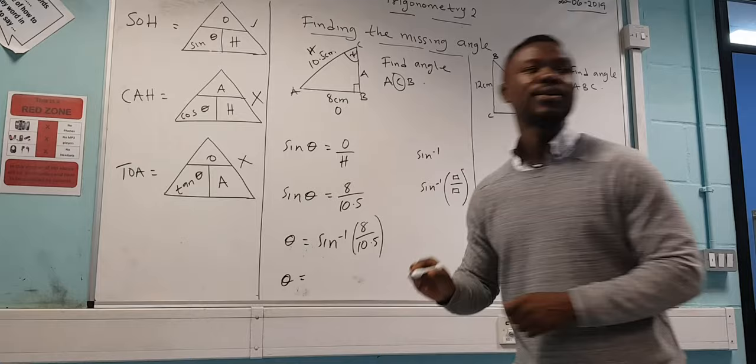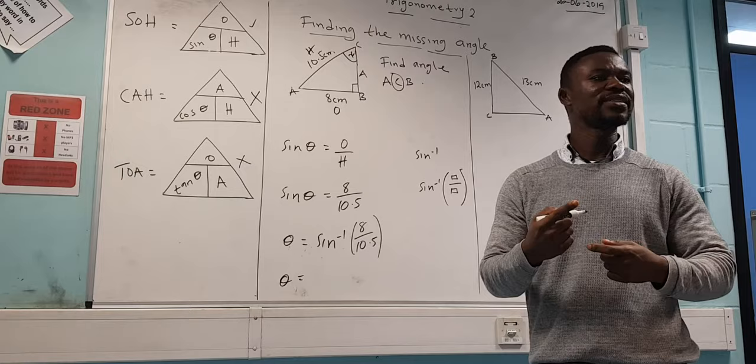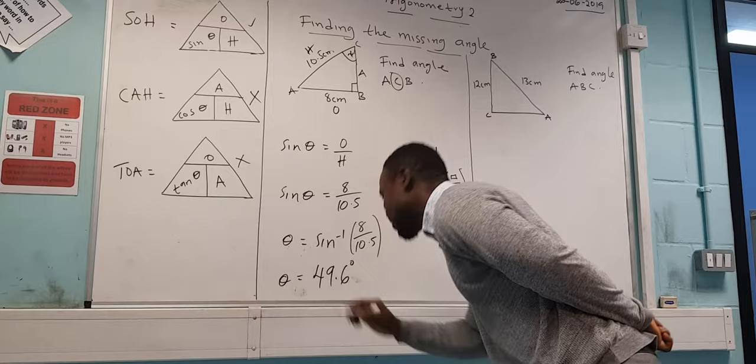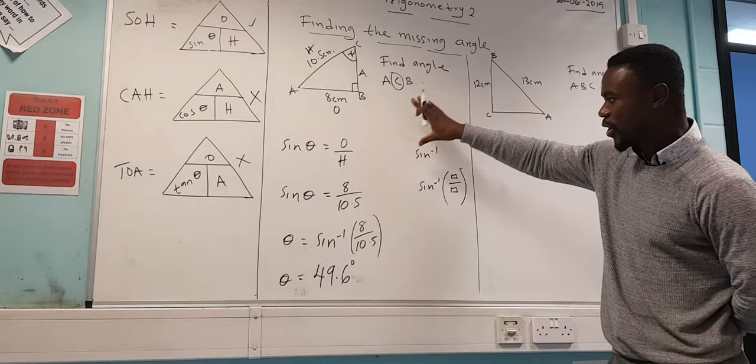And what is the answer there? 49.6. 49.6. Okay, to one decimal please. 49.6. So we have 49.6 degrees. So the angle is 49.6. Are we okay with this? Yes.